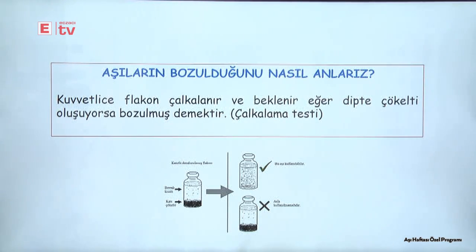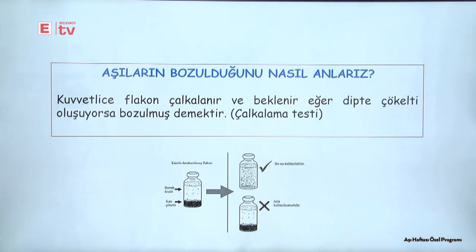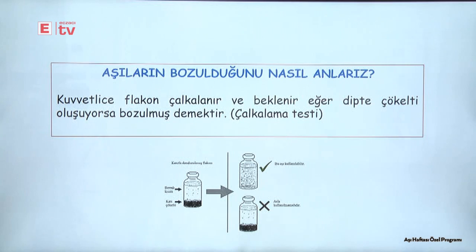Aşılar bozulduğunda nasıl anlarız? Aşının bulunduğu flakon kuvvetlice çalkalanır, çalkalandıktan sonra 5, 20 ya da 30 dakika beklenir. Eğer dipte çökelti oluştuysa aşının bozulduğunu anlarız. Buna çalkalama testi diyoruz; çalkalama testinin kurallarına uygun olarak aşının bozulup bozulmadığı kontrol edilebilir.